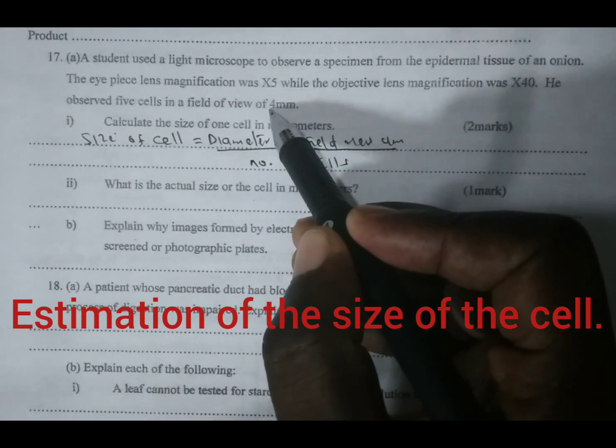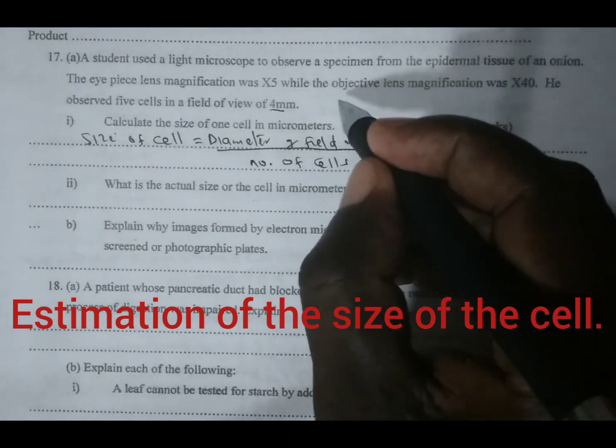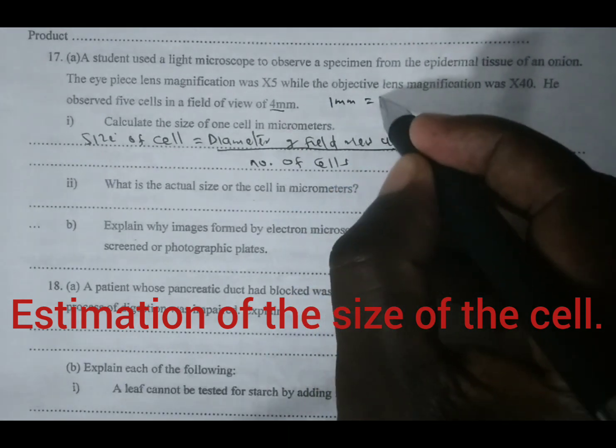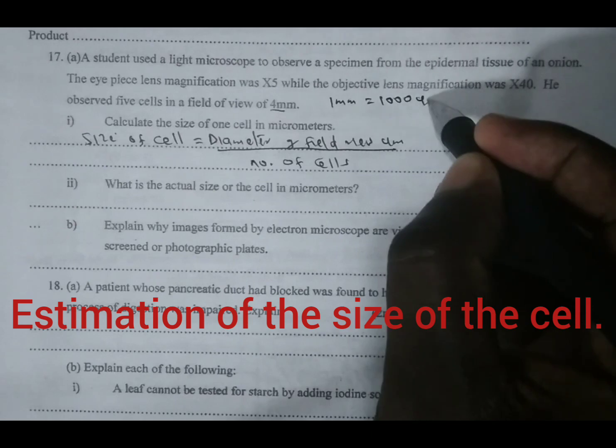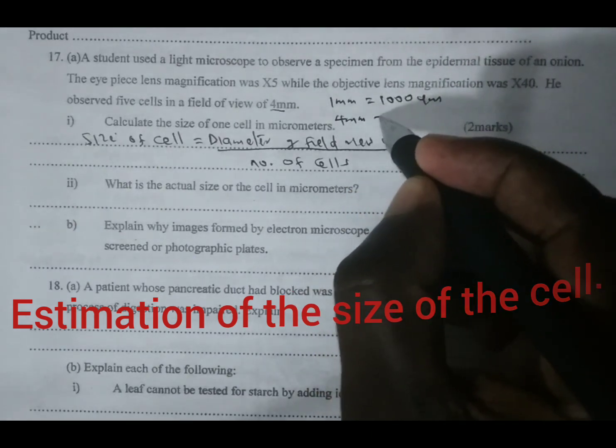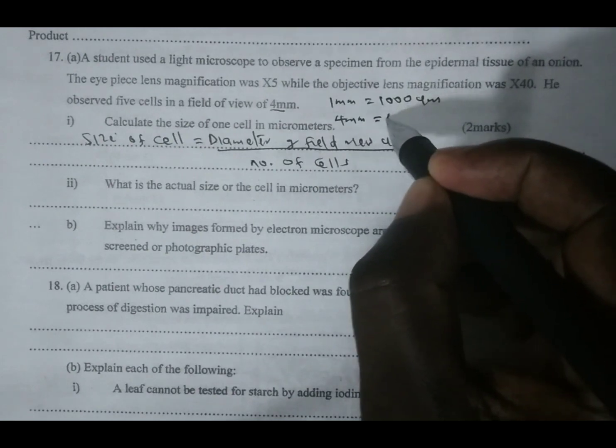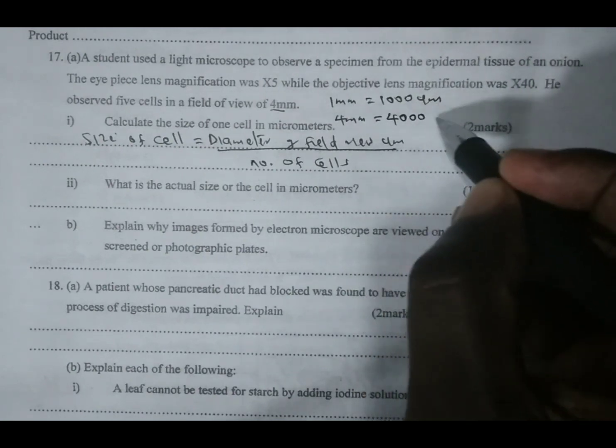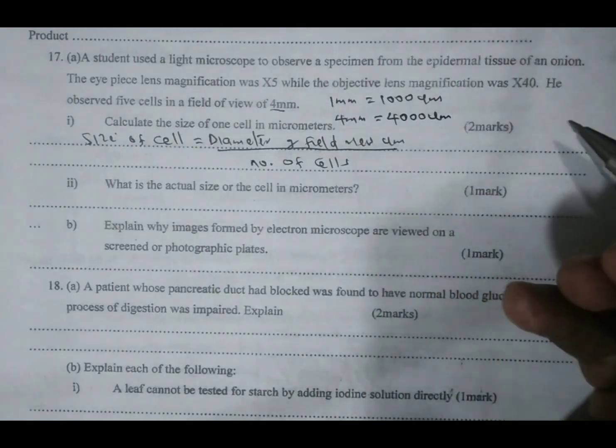We divide by the number of cells observed along the diameter of field of view. We have been told that diameter is 4 millimeters, and we know 1 millimeter is equivalent to 1000 micrometers, meaning 4 millimeters would be equivalent to 4000 micrometers.